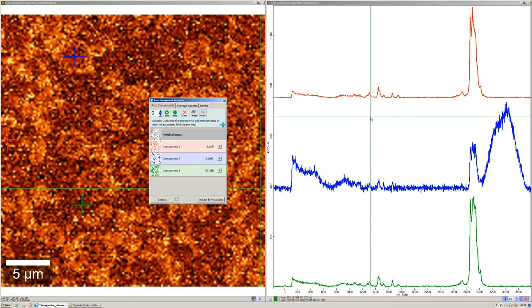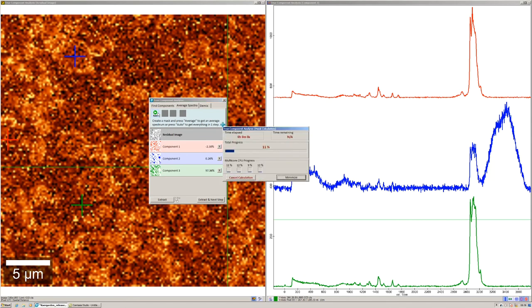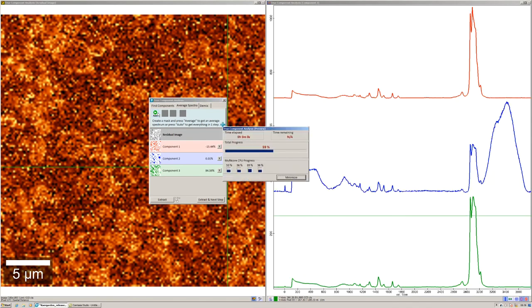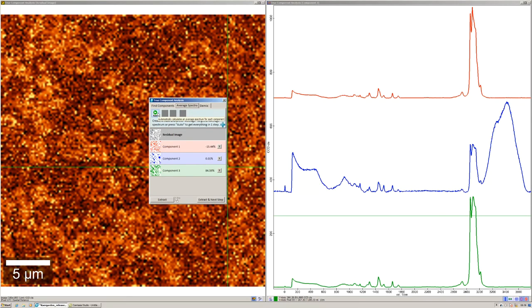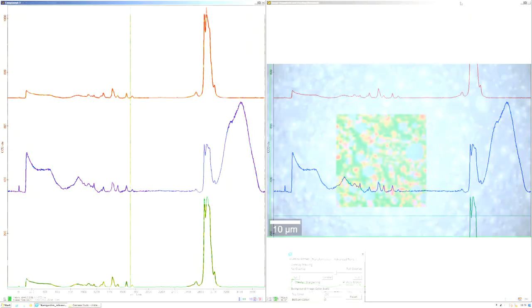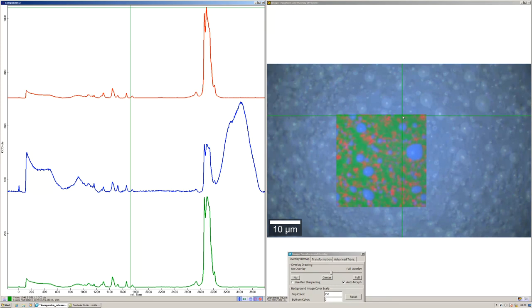Going to the next step to the average spectra allows me to automatically calculate the average for the spectra based on which spectra are similar in the dataset. With this, I have my average spectra for describing my entire dataset. So we see here the three different components.